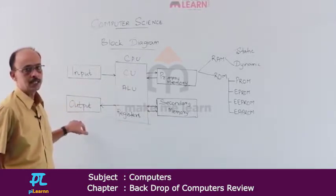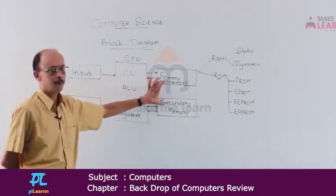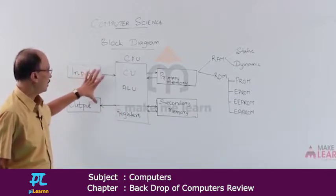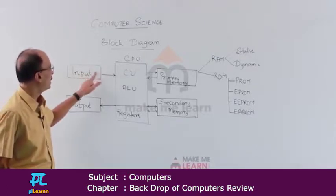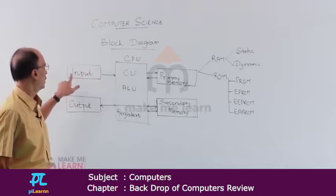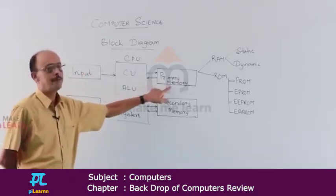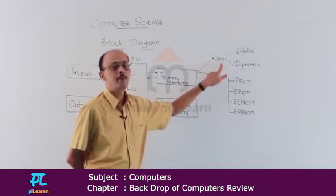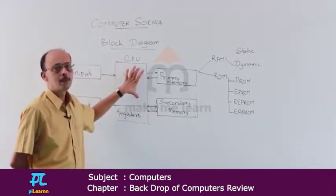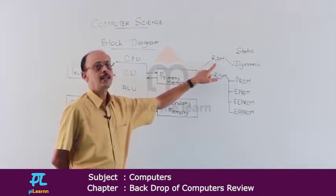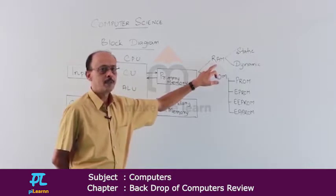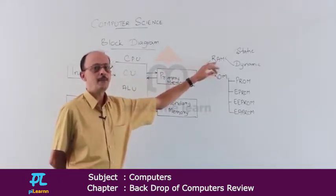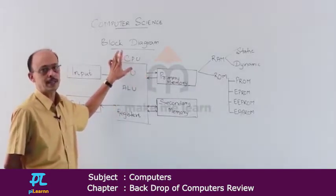The block diagram is divided into three basic parts: input and output parts, CPU, and memory. The CPU consists of a control unit, arithmetic logic unit, and registers. The input/output units are used to accept and display data. Data accepted through the keyboard or any input device goes to the primary memory, specifically random access memory, also called the main memory of the system.